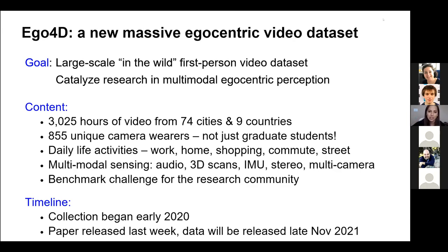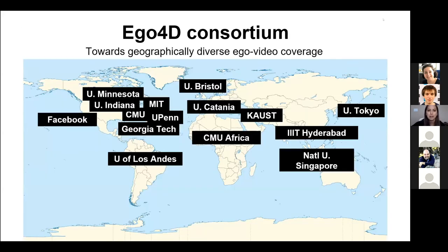The Ego4D consortium involved a large number of collaborators plotted on a map. These are all the different institutions that make up the consortium — a team strong both in expertise in the area and in geographic diversity, which plays a great role in allowing us to see video from many parts of the world.